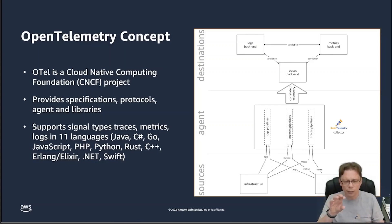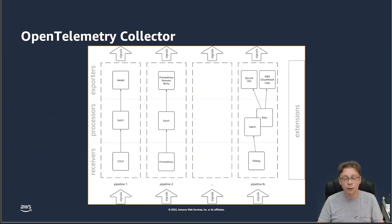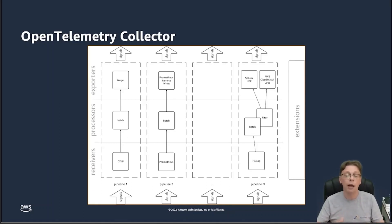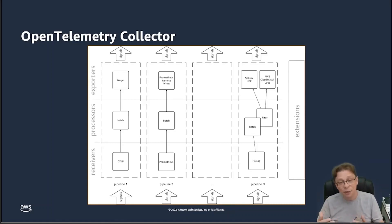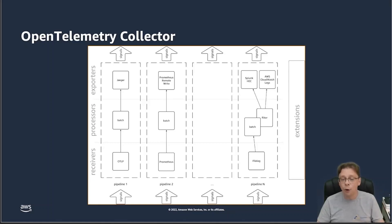Now, if we zoom in on the collector, how does that look conceptually? We're talking about so-called pipelines. This is per signal type — a pipeline for logs, a pipeline for metrics, a pipeline for traces, and potentially a pipeline for profiles in the future. Conceptually, pipelines have three different types of components that you can use, a bit like Lego bricks.